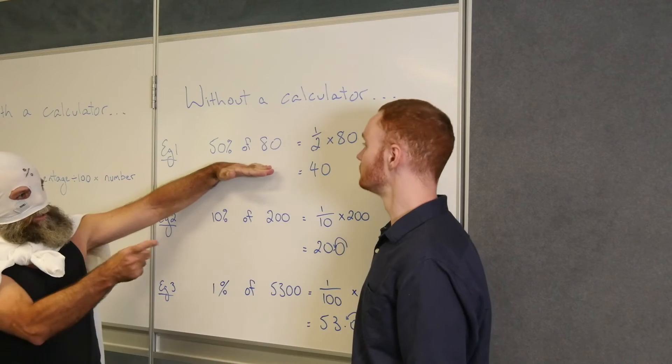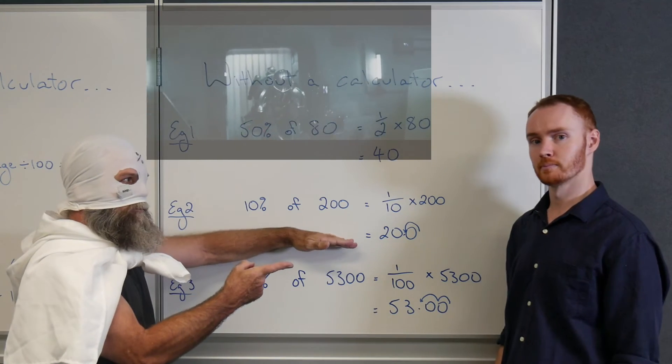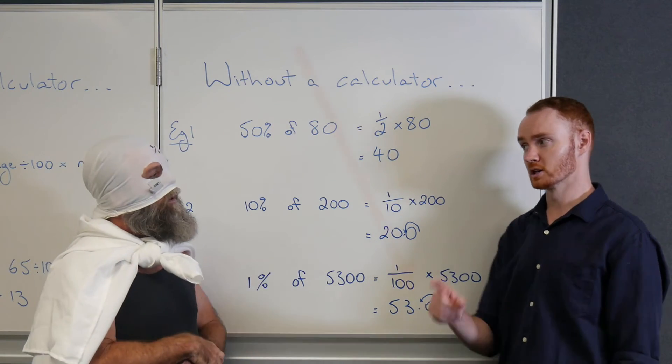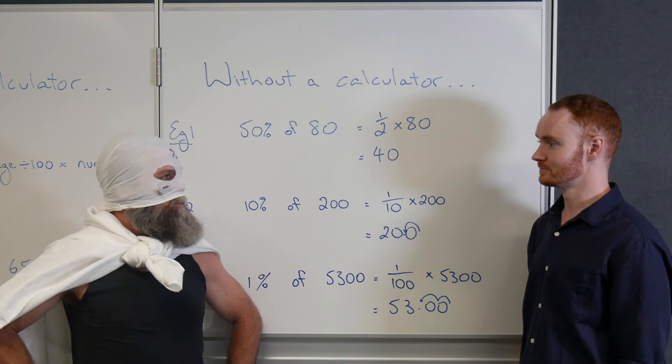So, sir, 50%, how do you do 50%? Halve it. Perfect. What about 10%? Move that decimal place up one position. Incredible stuff. And last of all, 1%. Move that decimal place up two positions. So you're incredible. Now you understand percentages.